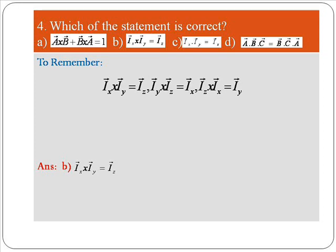Fourth question: which of the following statements is correct? Option A: A × B + B × A = 1. Option B: i_x × i_y = i_z. Option C: i_x · i_y = i_z. Option D: A·B·C = B·C·A. Recall that the cross product of the same unit vectors equals zero, and for different unit vectors: i_x × i_y = i_z, i_y × i_z = i_x, i_z × i_x = i_y. Therefore option B is the right answer.